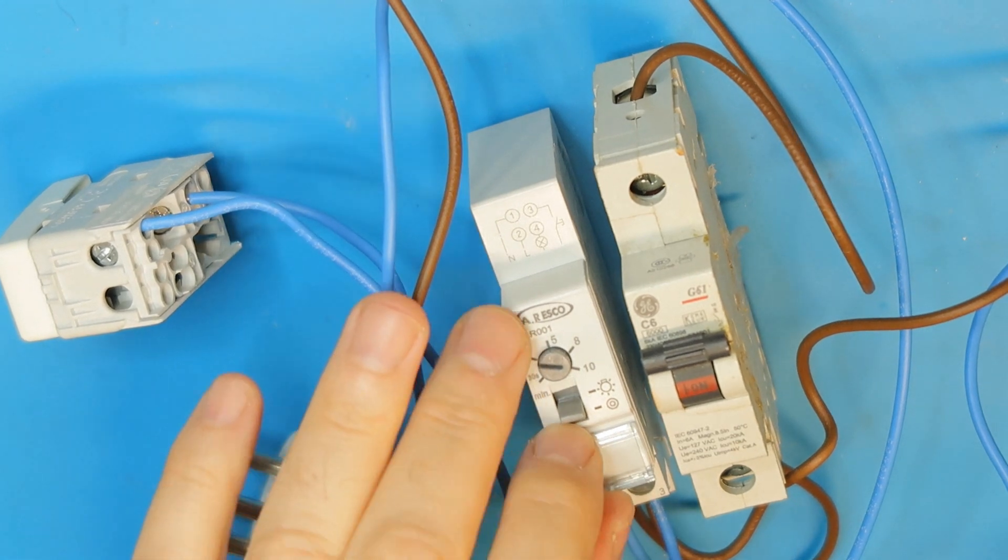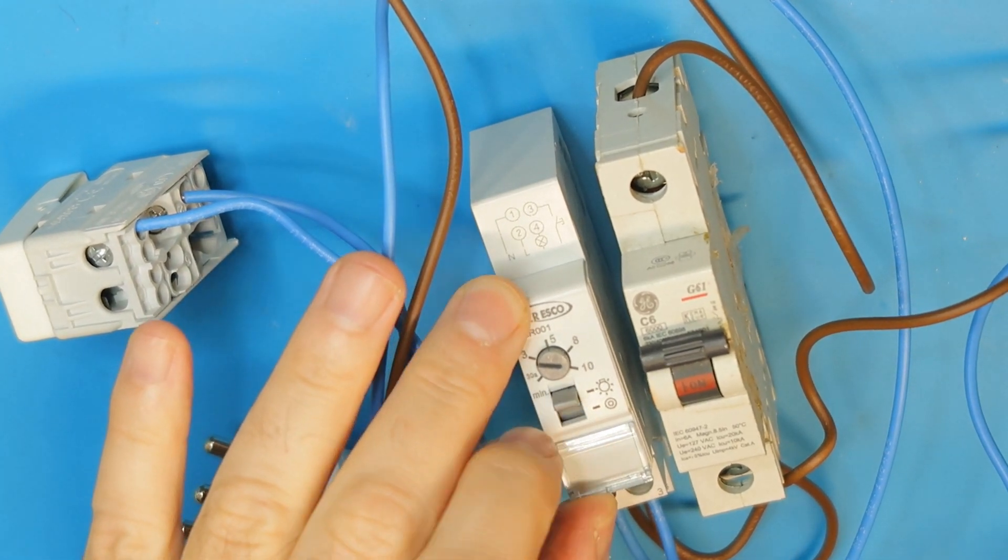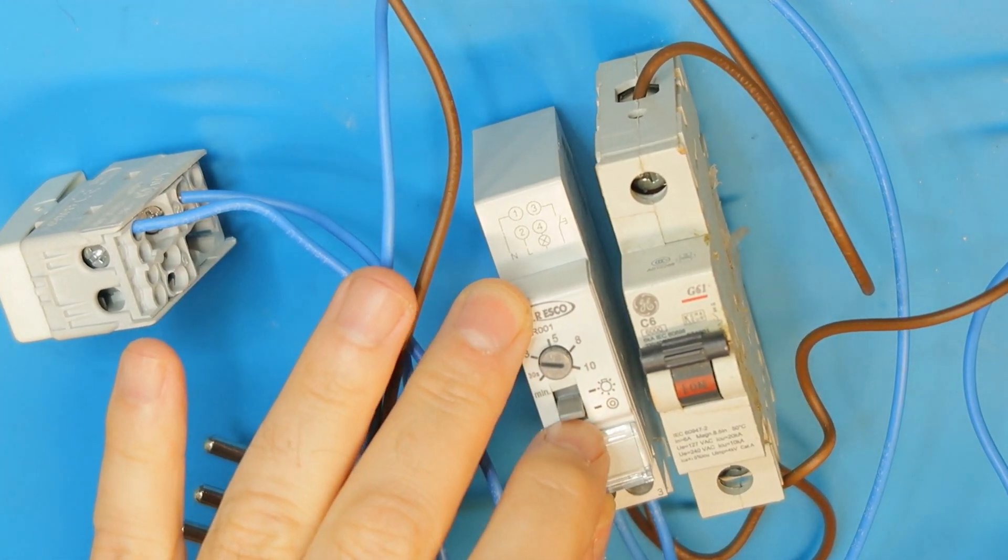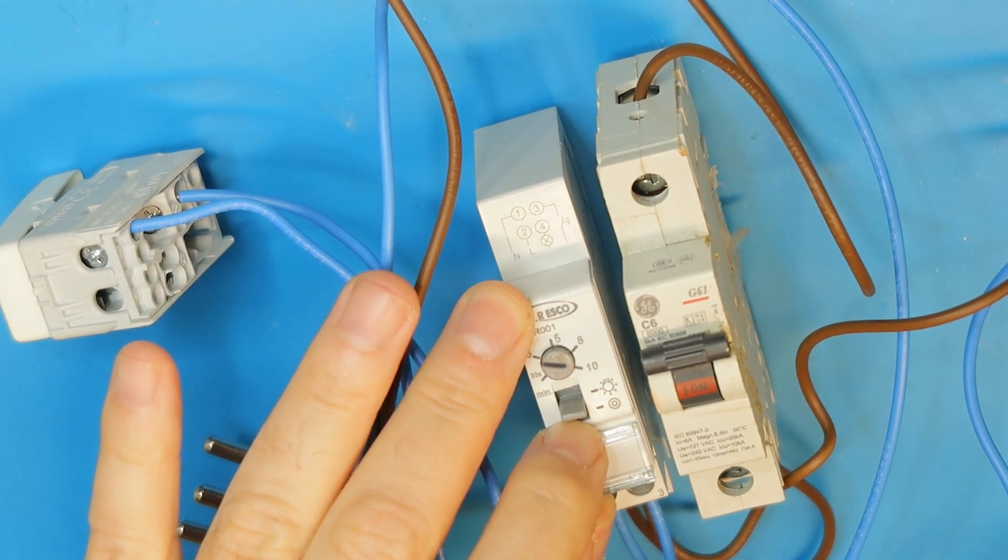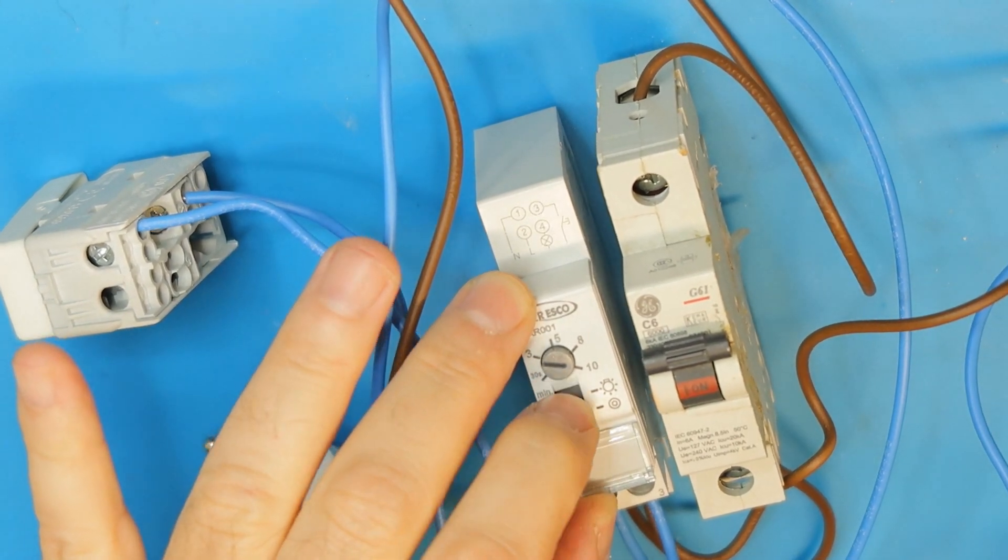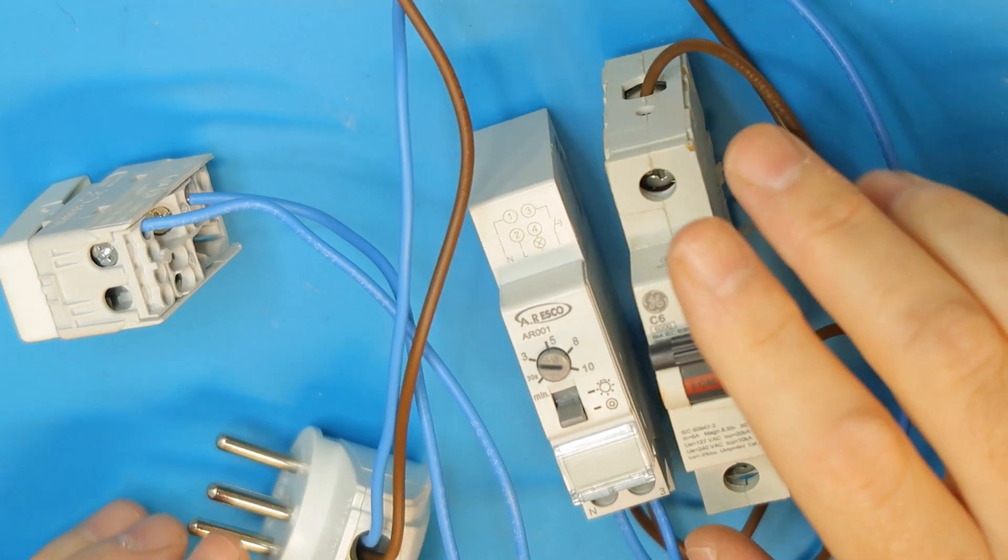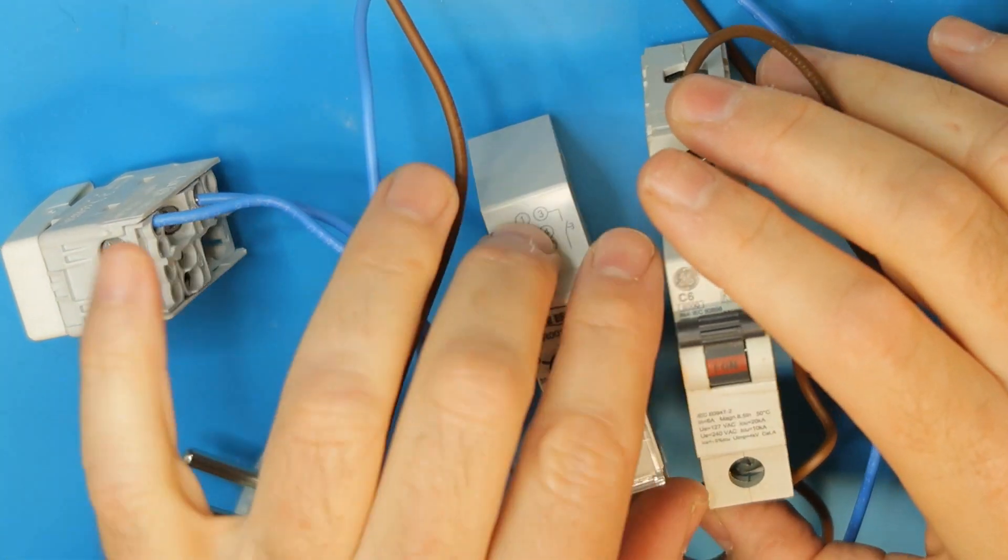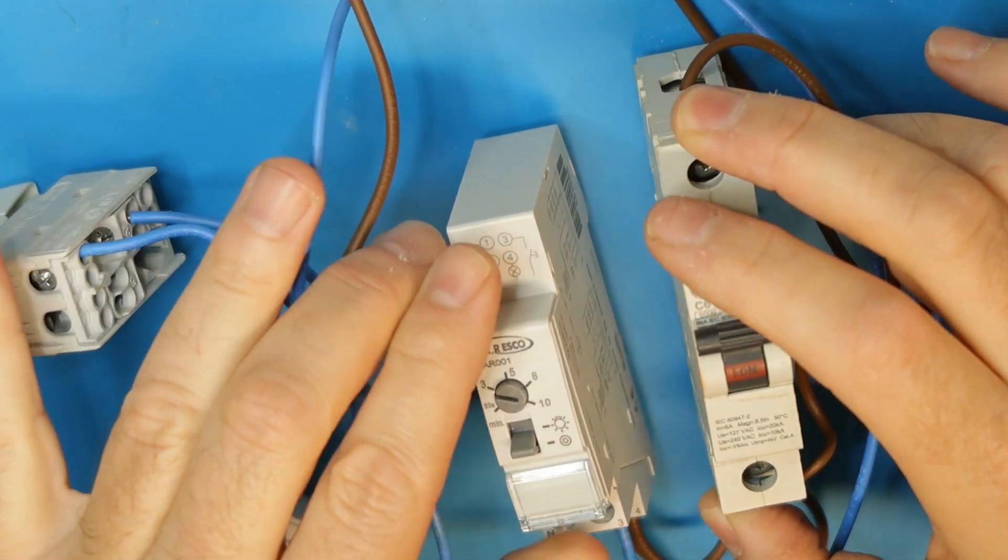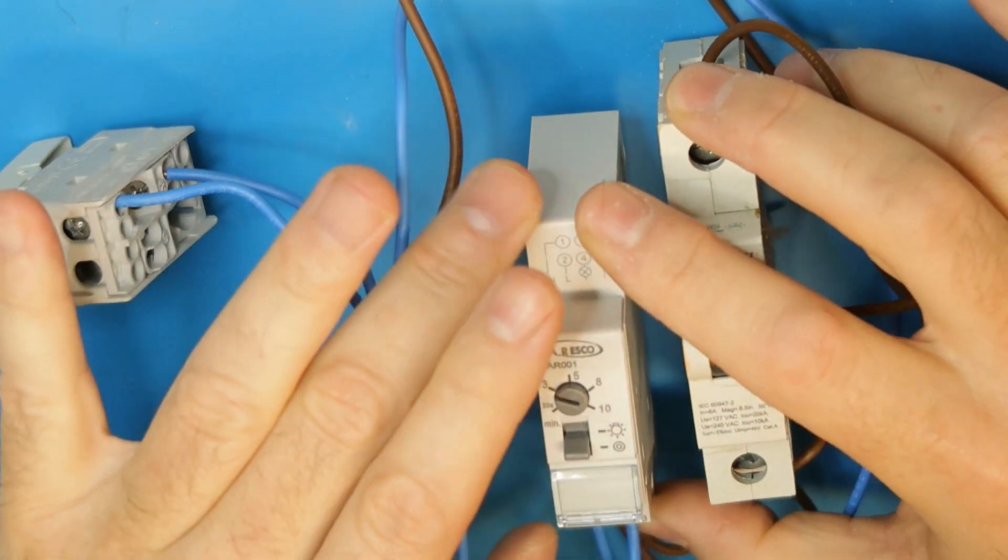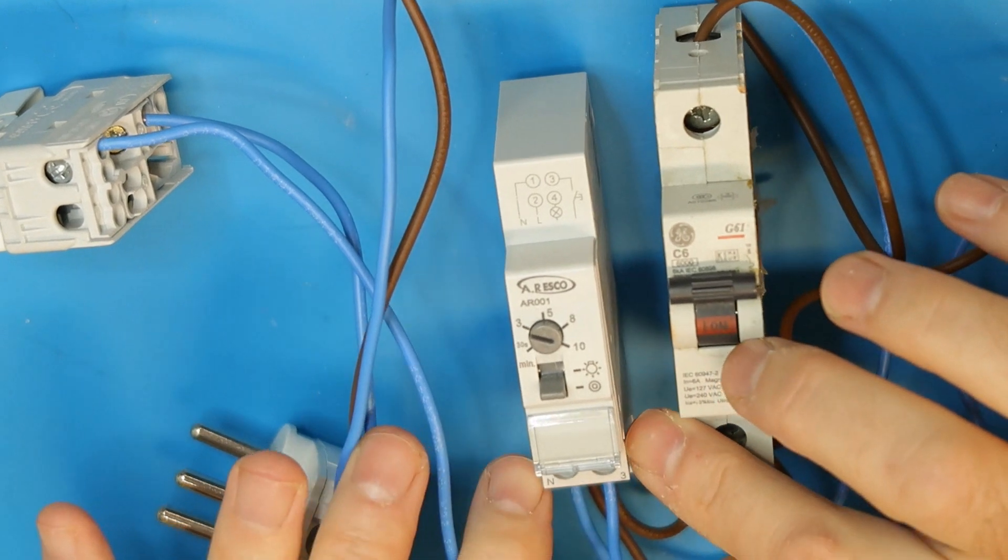You have the auto mode or the manual mode, let's say continuously on and automatic. How it works, again you have to check because some of them work differently and it's not saying that all are working the same way. On this you can see we have four contacts here.